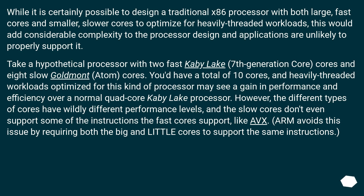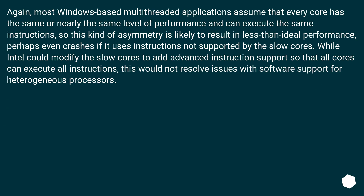ARM avoids this issue by requiring both the big and little cores to support the same instructions. Most Windows-based multi-threaded applications assume that every core has the same or nearly the same level of performance and can execute the same instructions, so this kind of asymmetry is likely to result in less than ideal performance — perhaps even crashes if it uses instructions not supported by the slow cores. While Intel could modify the slow cores to add advanced instruction support so that all cores can execute all instructions, this would not resolve issues with software support for heterogeneous processors.